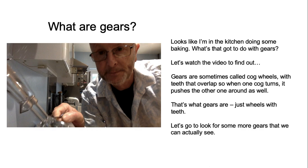Gears are sometimes called cog wheels — wheels with teeth that overlap, so when one cog turns it pushes the other one round as well. That's what gears are: just wheels with teeth. Let's go to look for some more gears that we can actually see.